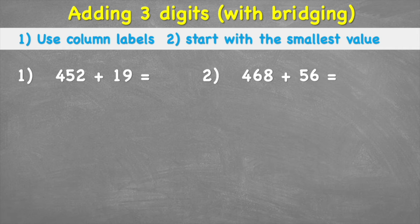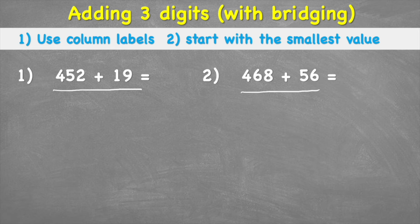Welcome back to the Maths Guide. Today we're looking at how to add three-digit numbers with bridging. We're going to look at two examples and follow two steps of success: use column labels and start with the smallest value.